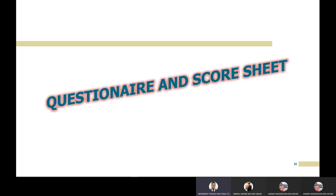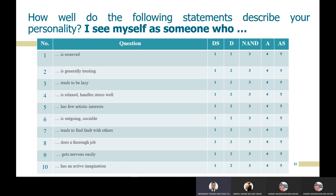Now we go to the questionnaire and score sheet. The test asks: 'How well do the following statements describe your personality?' Each item begins with 'I see myself as someone who...' For example, item one: 'I see myself as someone who is reserved.' If I agree, I circle four. Item two: 'I see myself as someone who is generally trusting.' If I strongly agree, I circle five.